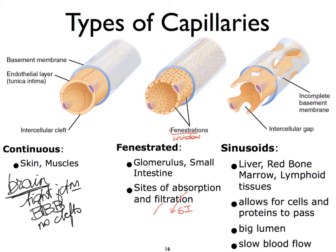We also find fenestrated capillaries in the kidneys, more specifically in the capillaries called the glomeruli — little balls of capillary beds. There are about a million in each kidney. These are pretty leaky, fenestrated capillaries, such that the blood passing through the kidneys will be filtered out to eventually create urine.